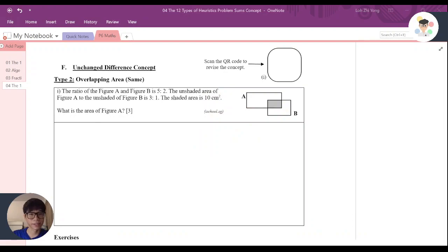Welcome back to the Ichilu class. This is a discussion for book number 4, the 12 types of realistic problem sum concept. And now we are under unchanged different concept, and this is type 2 overlapping area.